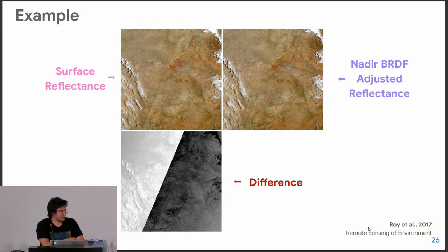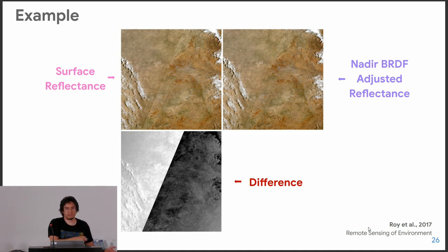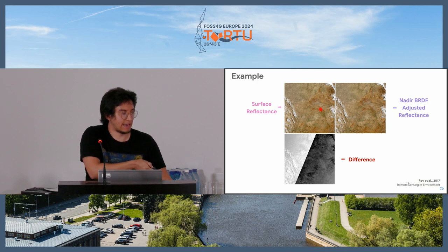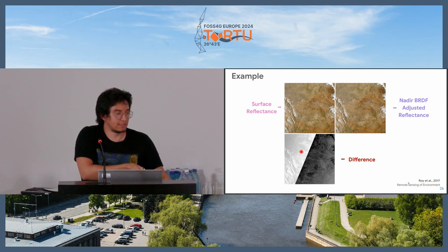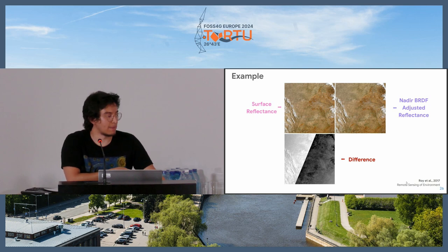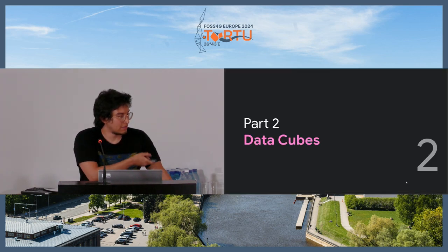You can see how it changes when you use surface reflectance versus Nadir BRDF adjusted reflectance. This shows the surface, this is adjusted, and this is the difference. You can see this is the end of one of the swaths, and the difference is visible in the intersecting sections. If we want to do analysis, the reflectance values can get messed up if we don't correct for this. It's not negligible, and it's pretty important especially if you want to work with data cubes.